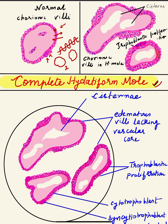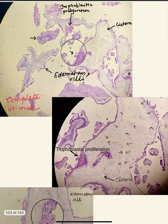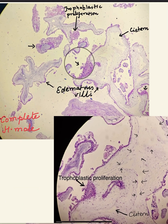The three important points are: first, proliferation of trophoblast — draw multiple layers of cytotrophoblast and syncytiotrophoblast, circumferential in complete mole and focal in partial mole. Second, the core of the villi will not have any blood vessels in complete mole, showing complete hydropic degeneration. Third, cistern formation — empty spaces seen in the core of the villi. Now let me show you a real microscopic image of a case.